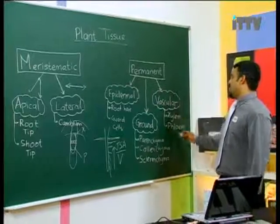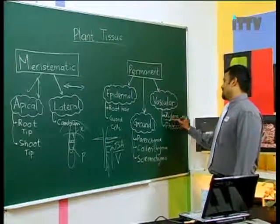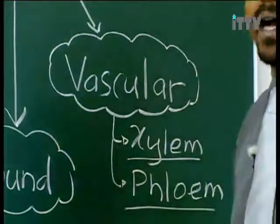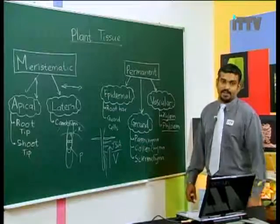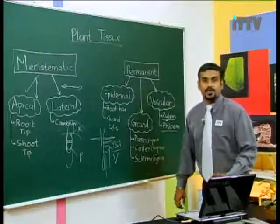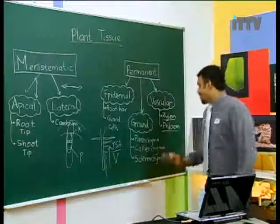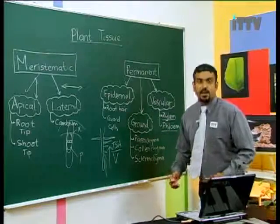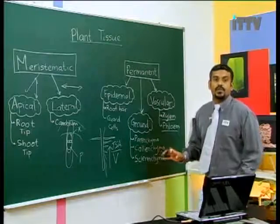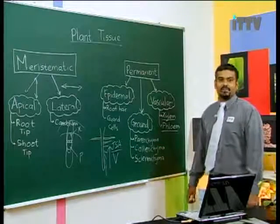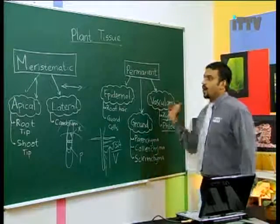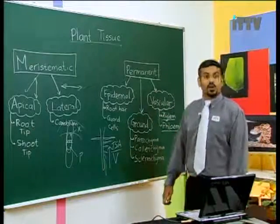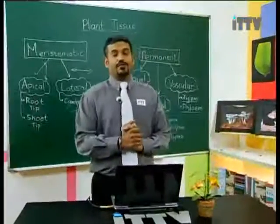Vascular tissue consists of xylem and phloem — you have learned this many times. Xylem transfers water from root to the leaf. Phloem transfers organic substances from the leaf to all growing parts of the plant.